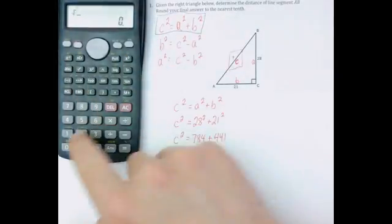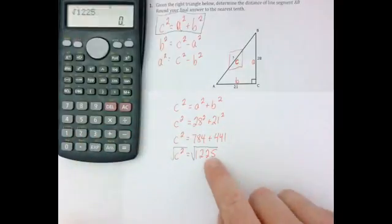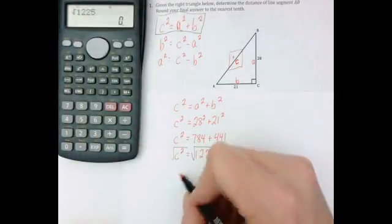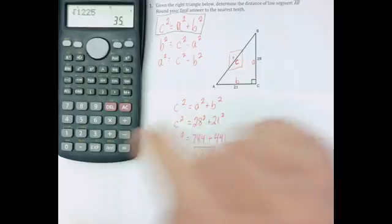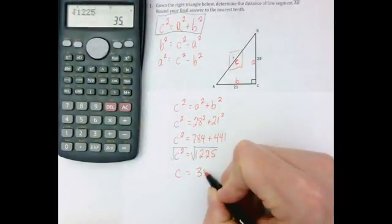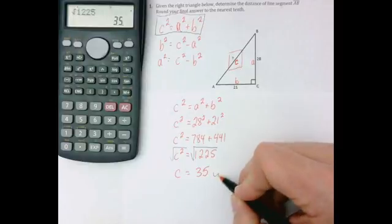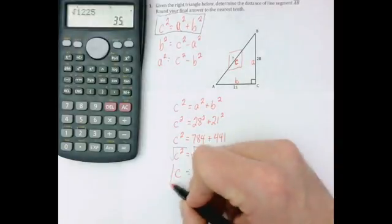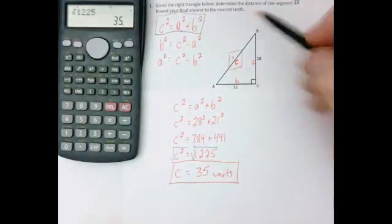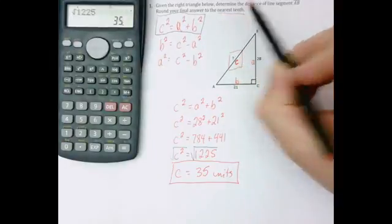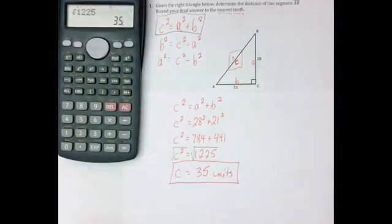So I'm going to take the square root of 1,225. And that will give me an answer for C. 35. And since they didn't give me a unit to measure, I'm just going to say units. Now in a question like this, even though they say round your answer to the nearest tenth, since there's no decimals, I'm going to leave it just the way it is. And that's my final answer.